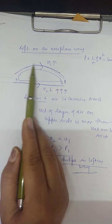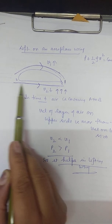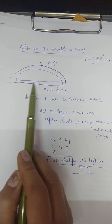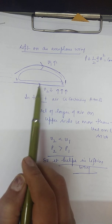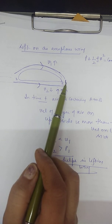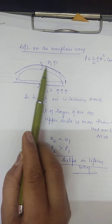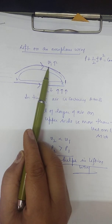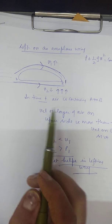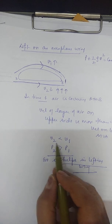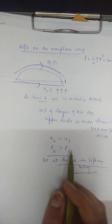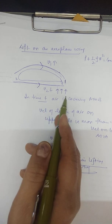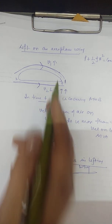That is why a special shape is provided to the aeroplane wing. The upper layer covers more path, the lower layer covers a smaller path. In the same time, the upper layer moves with more velocity, so V1 is greater than V2, and pressure on the lower side is greater than the upper side.